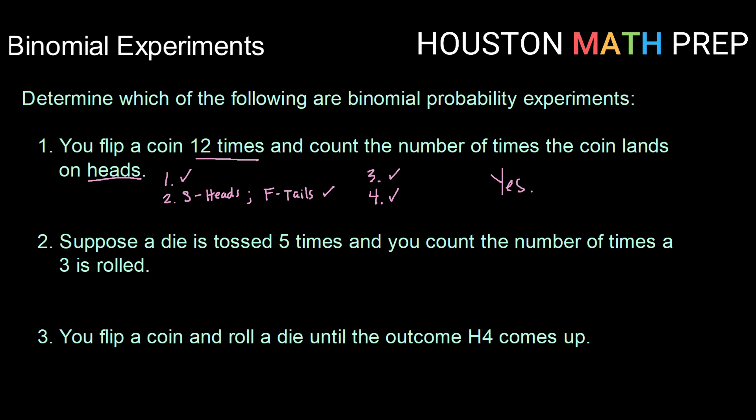Moving to the next one. Same process. We're going to go through our four criteria. Suppose a die is tossed five times and you count the number of times a three is rolled. First thing, do we have a fixed number of trials and are they independent?